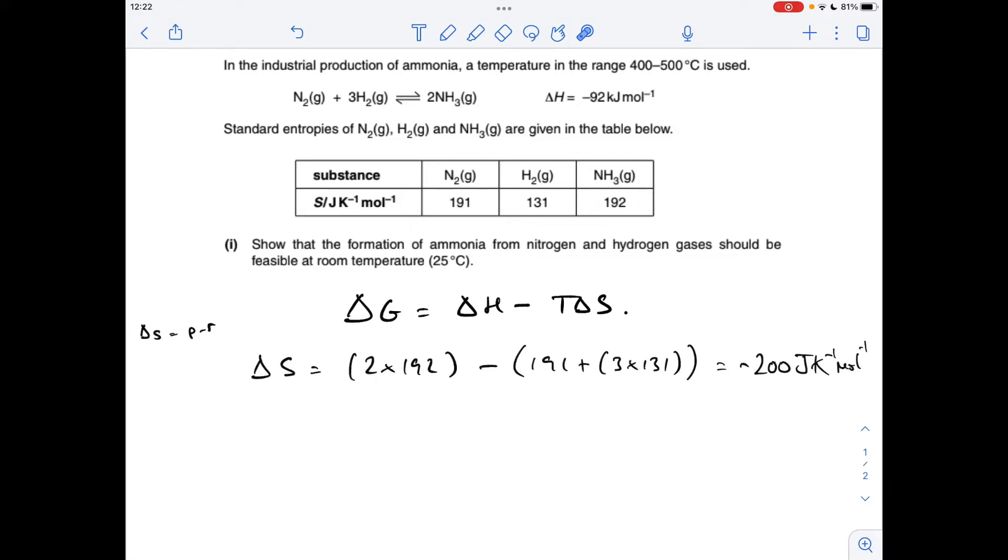Okay, so the first thing we've got to do is calculate the entropy change for the reaction. So delta S is the entropies of the product minus the reactants, and that comes out at minus 200 joules per Kelvin per mole.